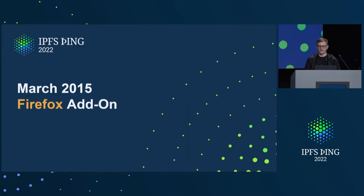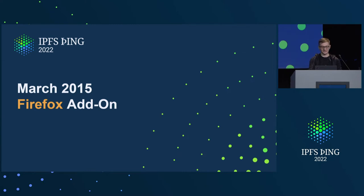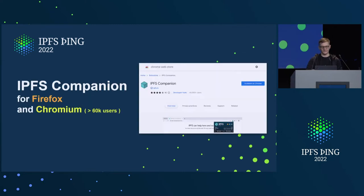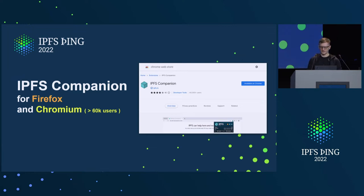The Firefox extension happened in March 2015 — I know because I looked at the first comment. It was only a Firefox extension at first. Over time, it added support for Chrome and Chromium-based browsers, and it got renamed to IPFS Companion. Now it's a browser extension which has over 60,000 users in the Chrome Web Store alone.